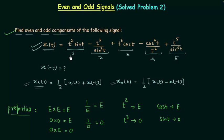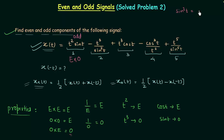First term: t² sin(t). Here t² is even and sin(t) is odd, so even × odd = odd. Therefore t² sin(t) is part of the odd component.